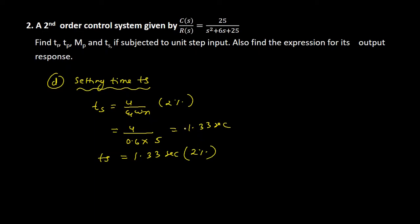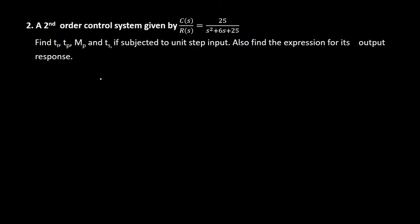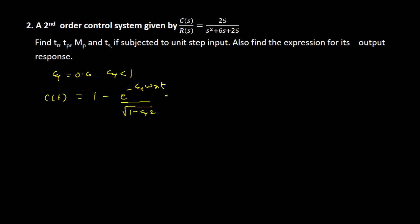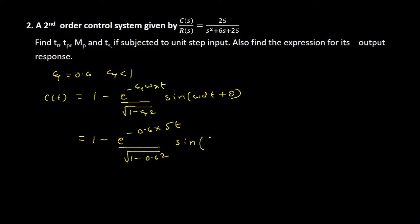Now we have found all the values of tr, tp, mp, and ts. Next, we find the expression for the output response. Since the damping ratio zeta equals 0.6, which is less than 1, the system is underdamped. For zeta less than 1, the response of the second order control system is: c(t) equals 1 minus e to the power of (minus zeta·omega_n·t) divided by sqrt(1 minus zeta squared), multiplied by sin(omega_d·t plus theta). Substituting zeta equals 0.6, omega_n equals 5, omega_d equals 4, and theta equals 0.9272 radians.